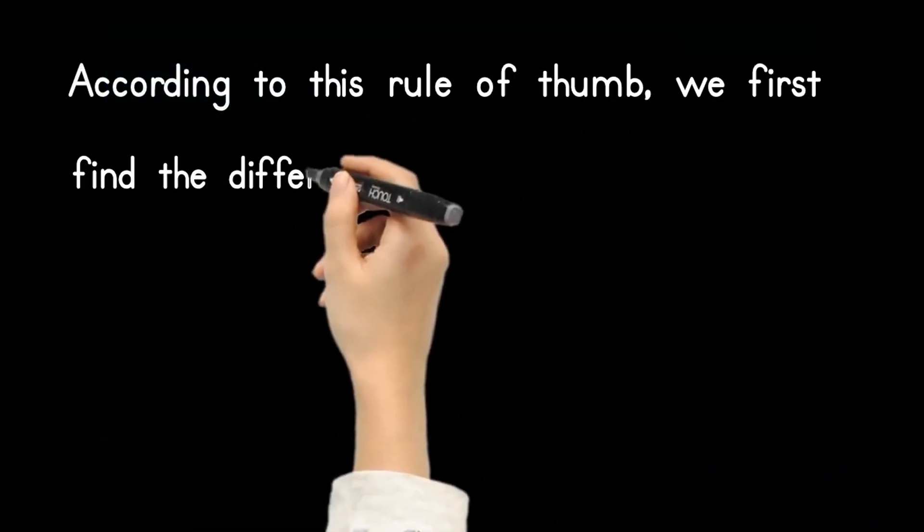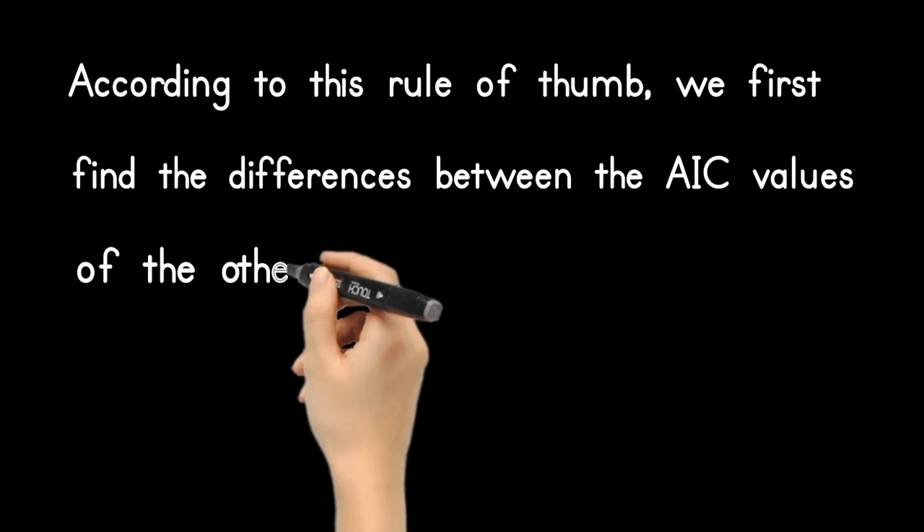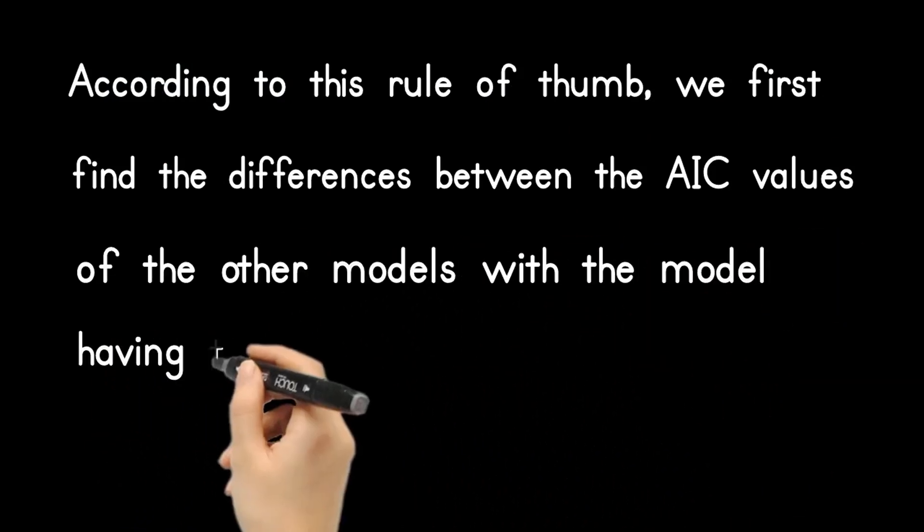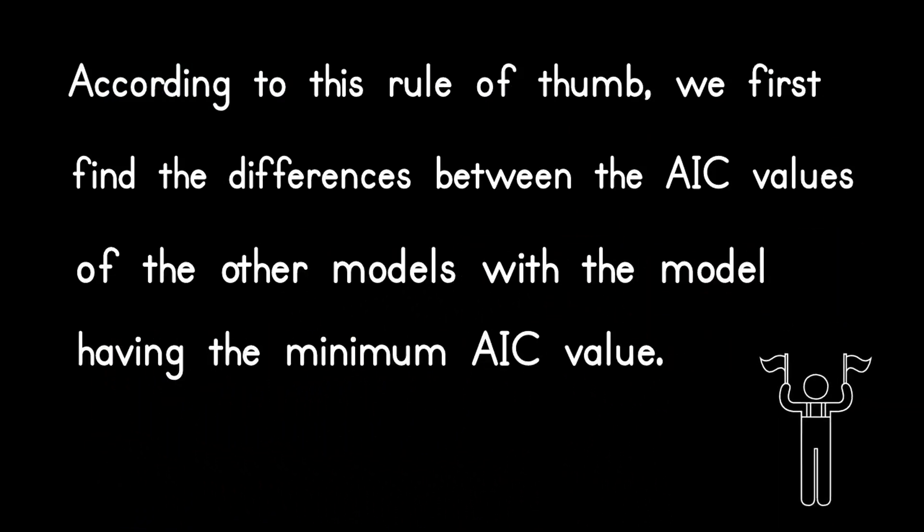According to this rule of thumb, we first find the differences between the AIC values of the other models with the model having the minimum AIC value.